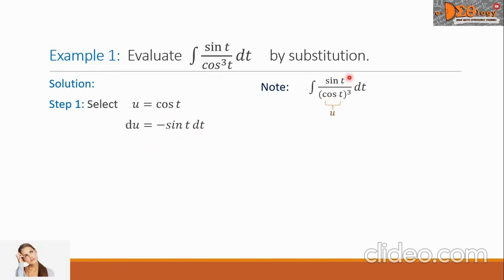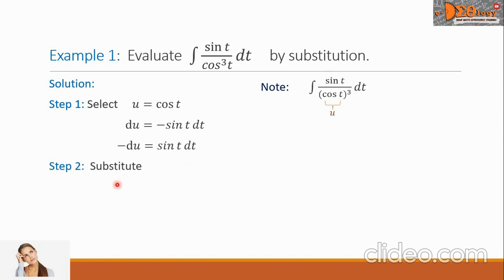Analyzing our integral, the remaining function is sin t dt, which is positive. So we multiply the equation by negative 1: negative du equals positive sin t dt. Step 2: substitute the values. Cosine t becomes u with power 3 in the denominator, and sin t dt is replaced by negative du in the numerator.